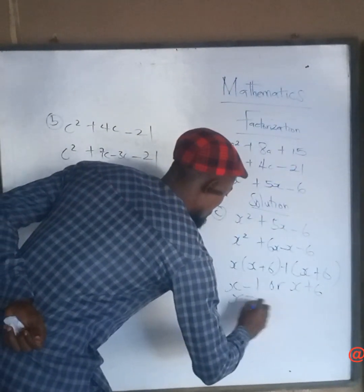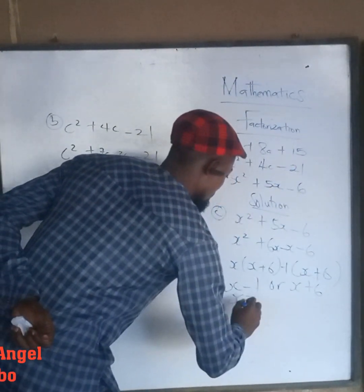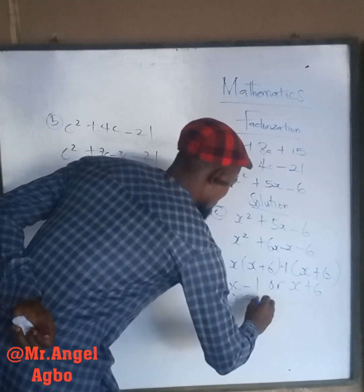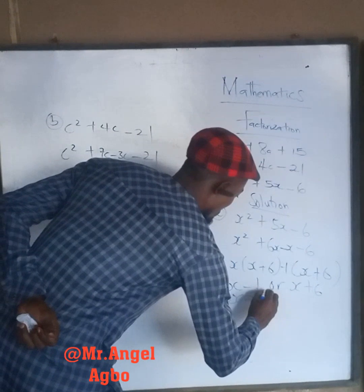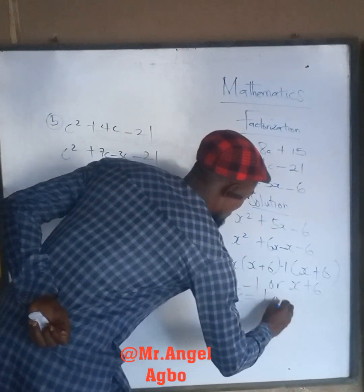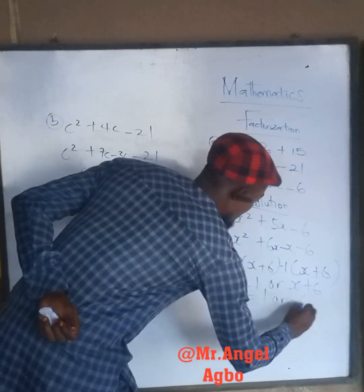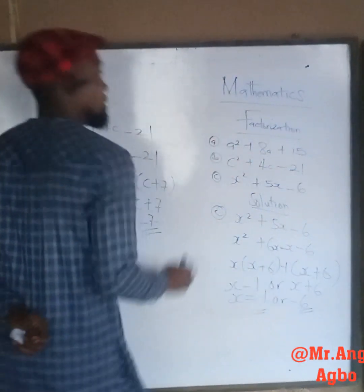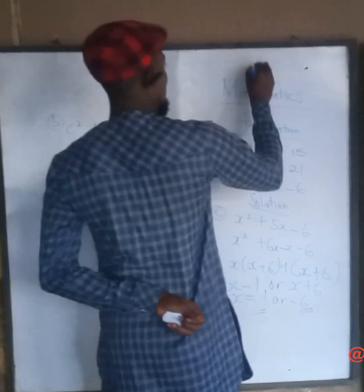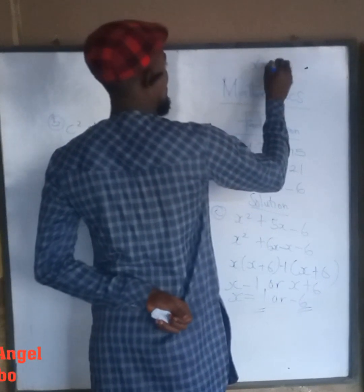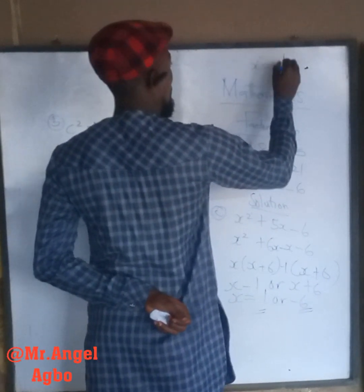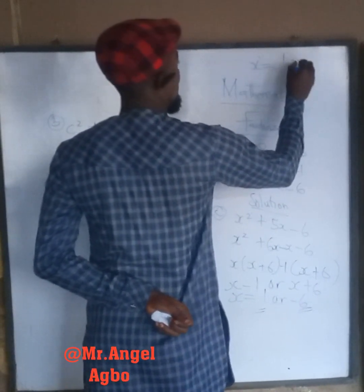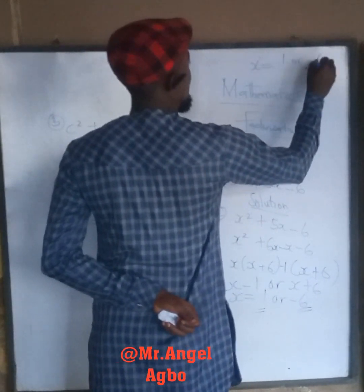x is equal to 1, or negative 6. So x equals 1 or negative 6.